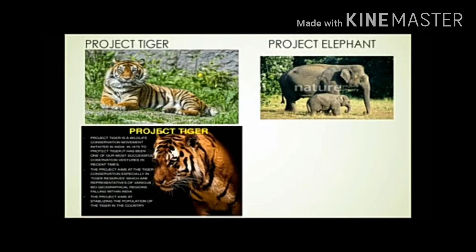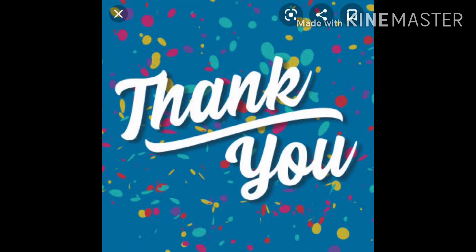The Government of India has set up a number of national parks and wildlife sanctuaries. The tiger, our national animal, is decreasing day by day, and similarly the number of elephants is also decreasing. The government has established Project Tiger and Project Elephant to protect these animals. This completes Chapter 5: Natural Vegetation and Wildlife of India and Brazil.